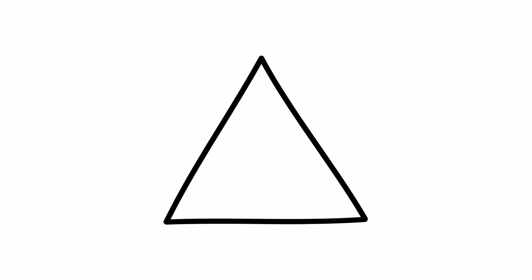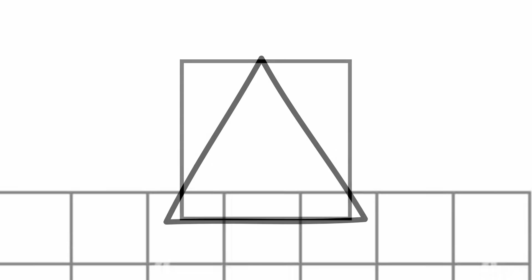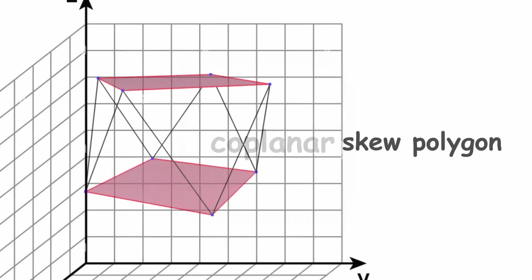Now, the vertices of a polygon usually lie in the same flat space or plane. In other words, they are coplanar. However, it is possible to have a polygon with non-coplanar vertices, known as a skew polygon.